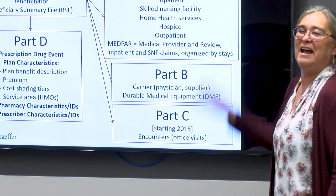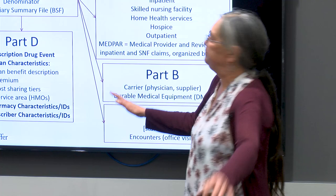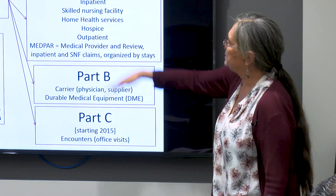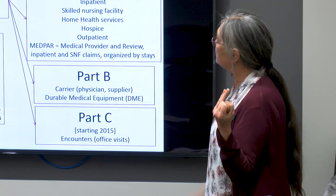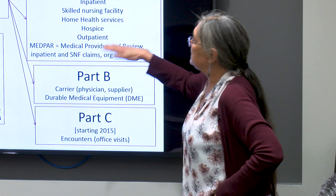Part A includes these types of files: there's an inpatient file with all inpatient claims, skilled nursing facility (SNF) files with all SNF claims, home health services, hospice, and outpatient — which would be outpatient in a hospital facility.